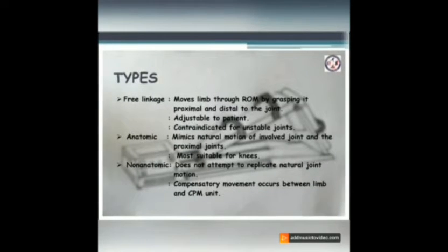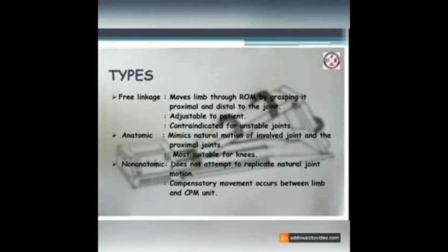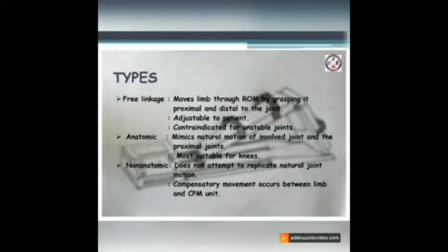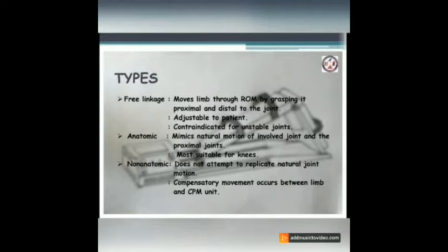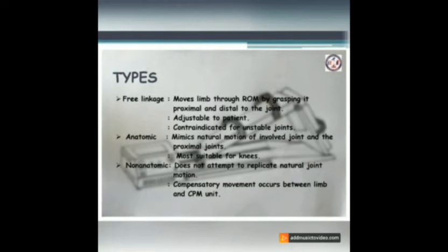Anatomic CPM mimics the natural motion and involved joint motion. Non-anatomic CPM does not replicate natural joint motion, but compensatory movement occurs between the limb and the CPM unit.